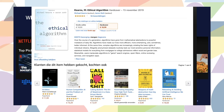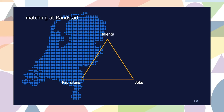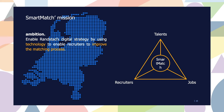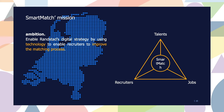So what is there to match at Randstad? We are very active in the matching industry and if you simplify our model we have three entities: talents who are looking for jobs, recruiters who sit in between, and jobs. Smart Match aims to sit in the middle of this. The ambition of Smart Match is to enable Randstad's digital strategy by using technology to help recruiters improve the matching process. It's important to underline that this is a product that aims to improve the human process — providing flexible, up-to-date, reliable and optimal search and match solutions.